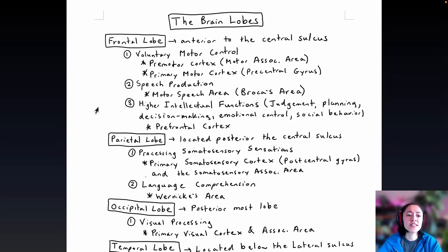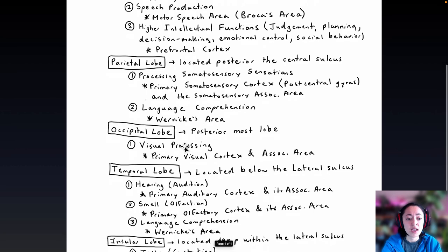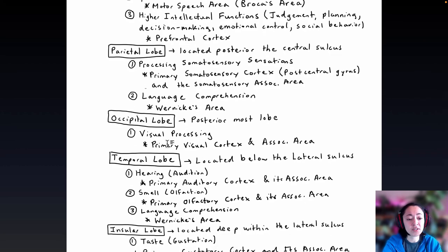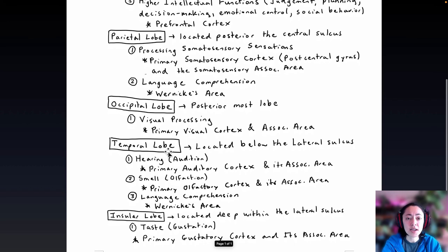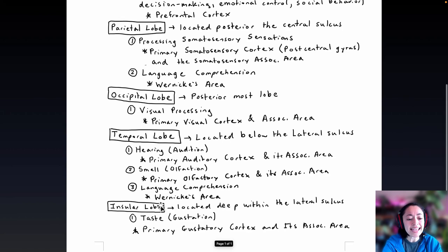In summary: the frontal lobe is important in voluntary motor control, speech production, and higher intellectual functions. The parietal lobe processes somatosensory sensations and is important in language comprehension. The occipital lobe handles visual processing. The temporal lobe processes hearing, smell, and language comprehension. And the insular lobe processes taste.